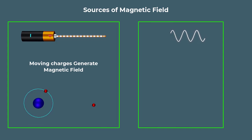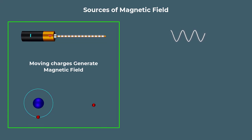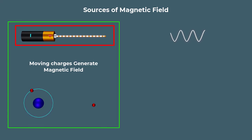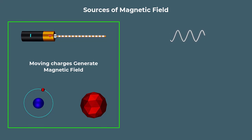The movement of charges could be the flow of electric current through a wire, the motion of electrons around a nucleus within an atom, or the spinning of electrons about their own axis.